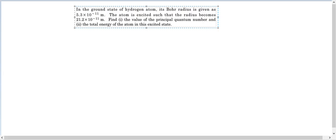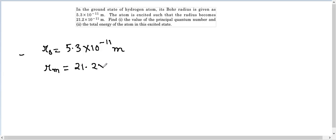Alright, there are two things that are given to us. The first is the Bohr radius in the ground state, that means r₀ is given to us as 5.3 × 10^-11 meters. And the radius in the excited state is given to us, so let's name it as r_m, so it is given to us as 21.2 × 10^-11 meters.